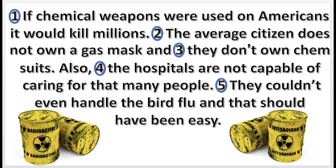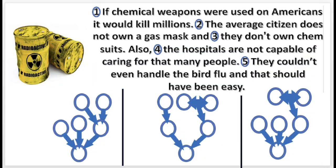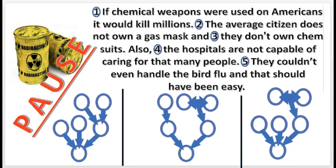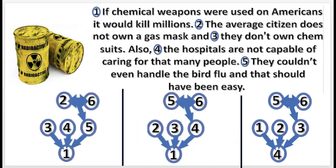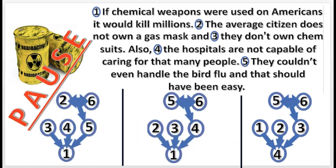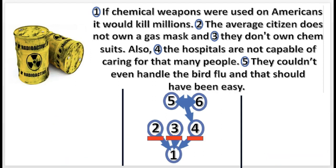Good job. Here's another practice problem. Choose the correct diagram and press pause. That's correct. Now choose the correct sequence and press pause. That's right. 1 is supported independently by 2, 3, and 4. And 4 is supported by 5 and 6 conjointly.